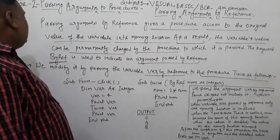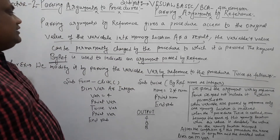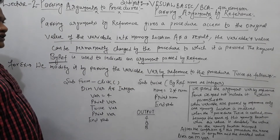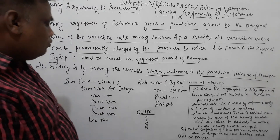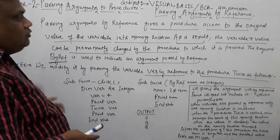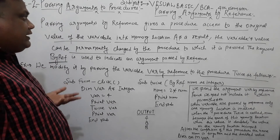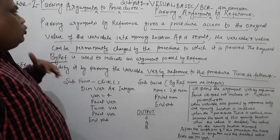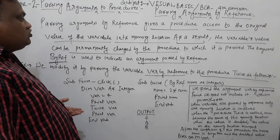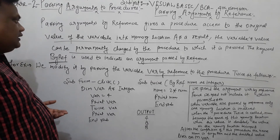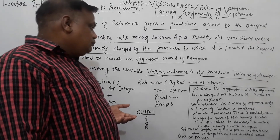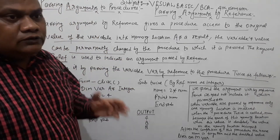As a result, the value can be permanently changed by the procedure to which it is passed. So this was the first difference — call by value versus call by reference. In call by reference, the memory location is permanently changed.